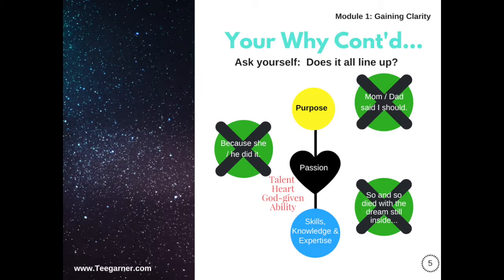Now that you're thinking about all the reasons why you want to publish and tell your story, I really want you to look at this chart and ask yourself if all of these things line up. When you think about writing and publishing, are you excited? Do you have passion? Do you have the skills and the knowledge? And even a little bit of expertise — whatever subject you're going to be writing about, you should have skills, knowledge, and expertise. Do you feel purposeful? When you're writing, do you feel like you have a real purpose and a real message to share with others? Do you have talent, heart, God-given ability?